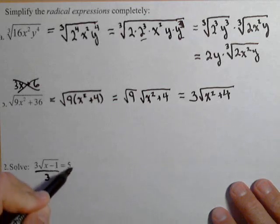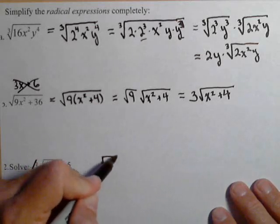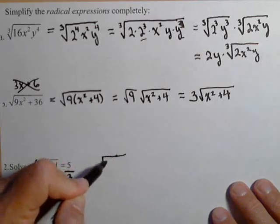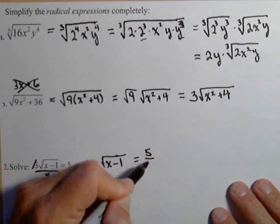We don't need to add or subtract anything to make this happen, but we can divide out the 3 to make this thing a little easier to deal with. So we got the square root of x minus 1 equal to 5 thirds.